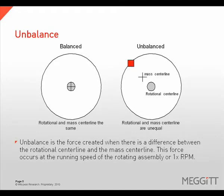Unbalance is the force generated when a difference between a rotational centerline and a mass centerline exists. This force occurs at running speed of the rotating assembly, or 1 times RPM. The vibration amplitude due to imbalance will increase by the square of the speed — if you double the speed of the rotor, vibration amplitude due to unbalance will increase by a factor of 4.